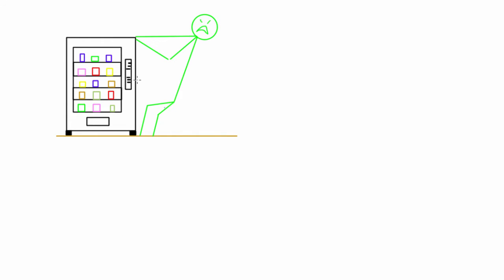Instead of drawing a free body diagram, I'm just going to draw the forces on the diagram to keep it simple. He's pulling with a force of 1300 newtons straight to the right. The vending machine has a weight of 4415 newtons, which works out to about 450 kilograms. There will be a force of friction opposing the impending slip — since he's pulling to the right, friction acts to the left, equal to mu_s times N, where mu_s is 0.6.